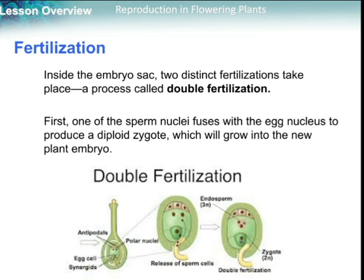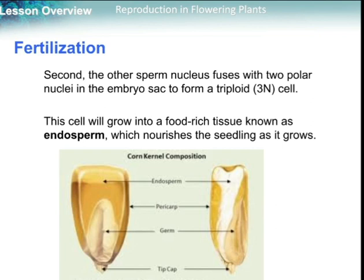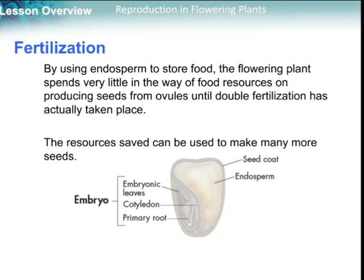Inside the embryo sac, two distinct fertilizations take place — a process called double fertilization. One sperm nucleus fuses with the egg nucleus to produce a diploid zygote, which will grow into a new plant embryo. The other sperm nucleus fuses with two polar nuclei in the embryo sac to form a triploid cell (3N). This triploid cell grows into a food-rich tissue known as endosperm, which nourishes the seedling as it grows. By using endosperm to store food, the flowering plant spends very little food resource on producing seeds. We can see the embryo at the lower left, and the endosperm and seed coat at the other part.